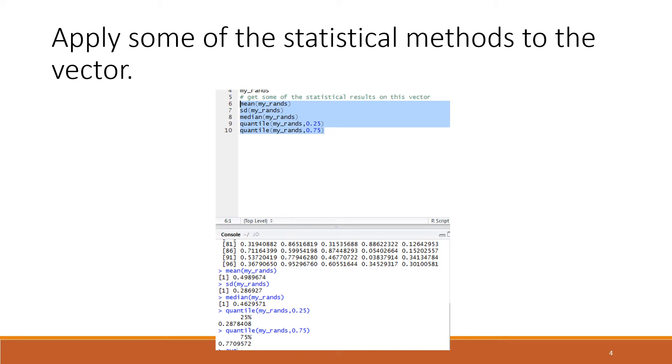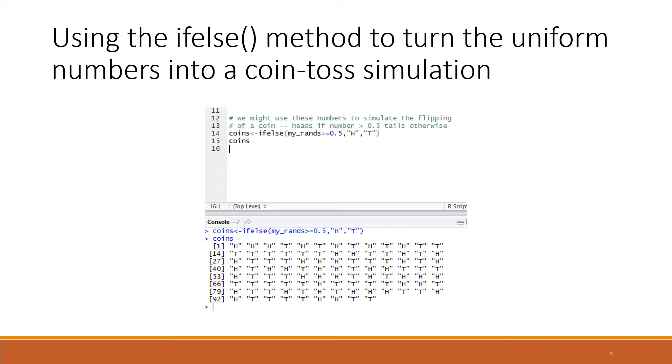Line 14 of the code is using the ifelse function with three arguments. The first argument is a condition: my_rands greater than or equal to 0.5. My_rands is a vector, a set of 100 things, so it's really 100 conditions. It asks each component of the vector, each element of the array, individually if it's greater than or equal to 1 half.